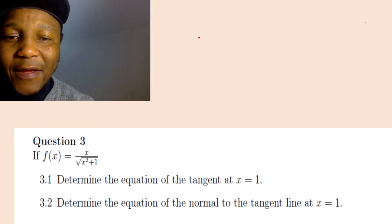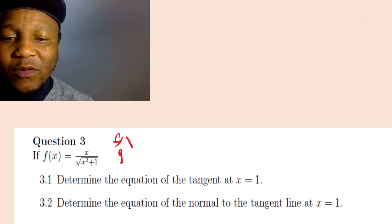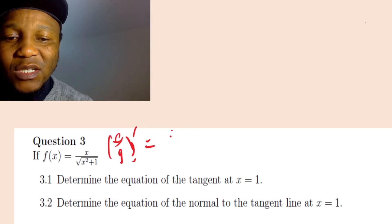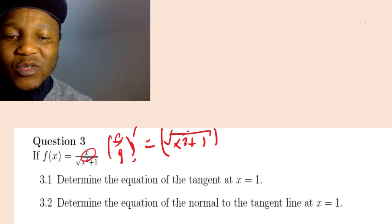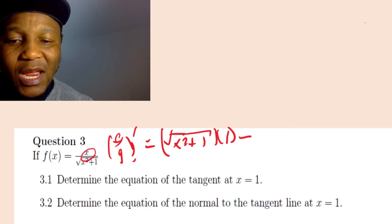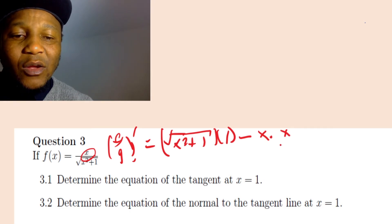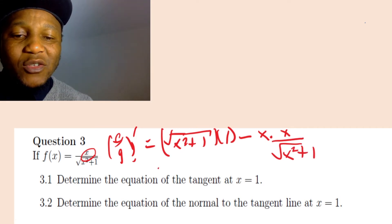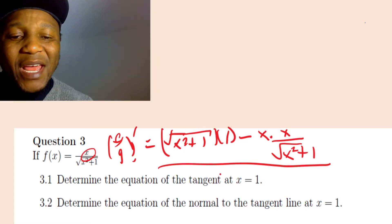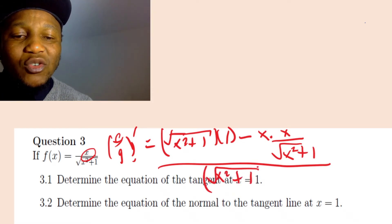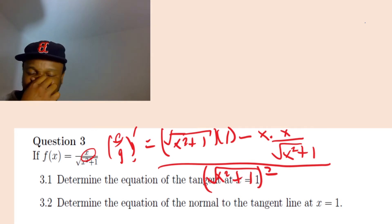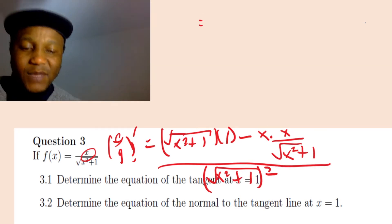My computer froze, so let me rewrite. We had f over g prime equal to: denominator constant, which is x squared plus one, times the derivative of x which is one, minus the numerator x constant times the derivative of the denominator, which we found to be x over square root of x squared plus one. All over the denominator squared, which is x squared plus one.